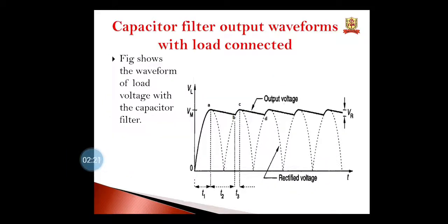This is the waveform across the capacitor with load resistor. The output of the rectifier is basically pulsating DC, shown here with the dotted line — in both the positive and negative half cycles you get a positive half cycle at the output. When that DC voltage is connected across the capacitor, the capacitor starts charging. It charges to the highest maximum value — that is Vm volts — then capacitor starts discharging, shown by the slant line from A to B. By the time the next positive half cycle comes, the capacitor again charges to maximum value from B to C, then again discharges from C to D, and it goes on. This is the voltage developed across the capacitor.